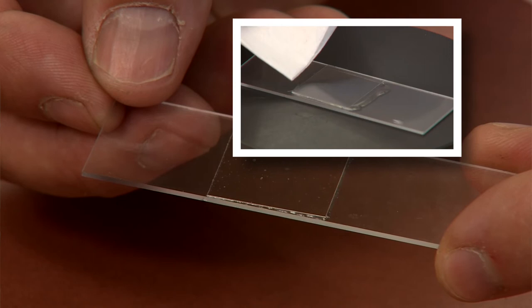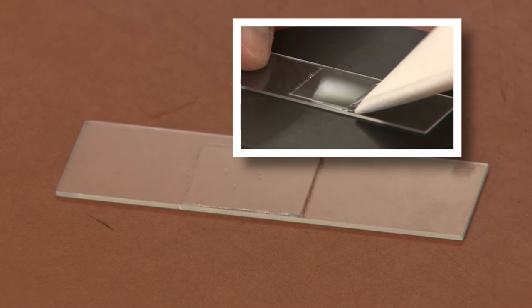If there is too much water and the coverslip is floating, touch the edge of a paper towel to the edge of the coverslip. This will absorb excess water.